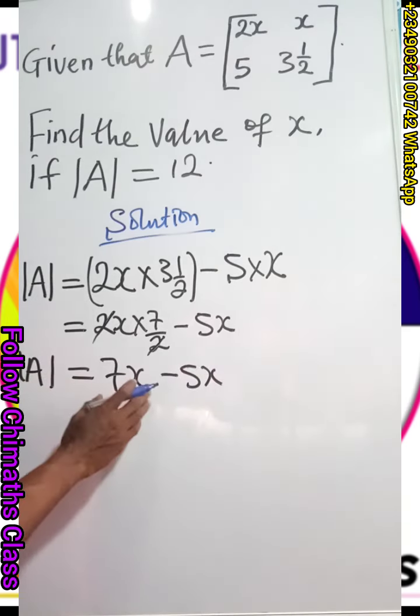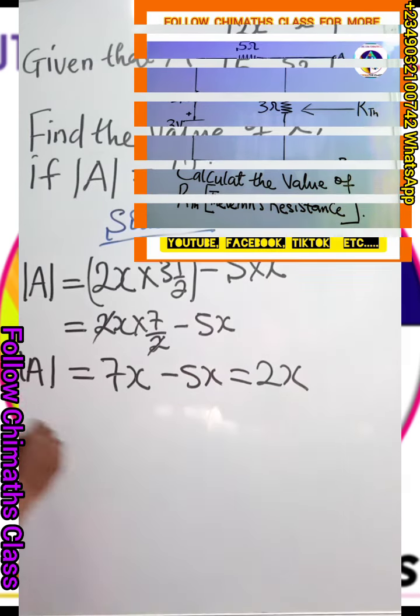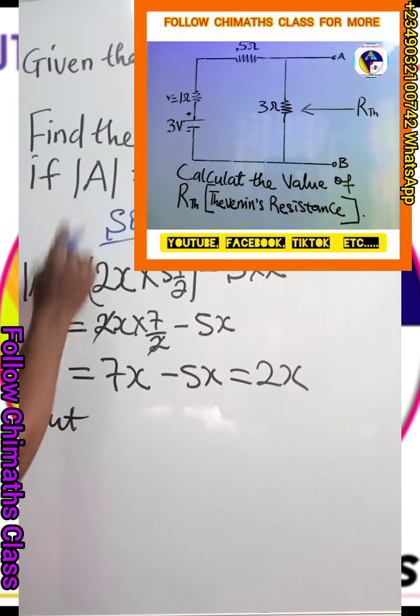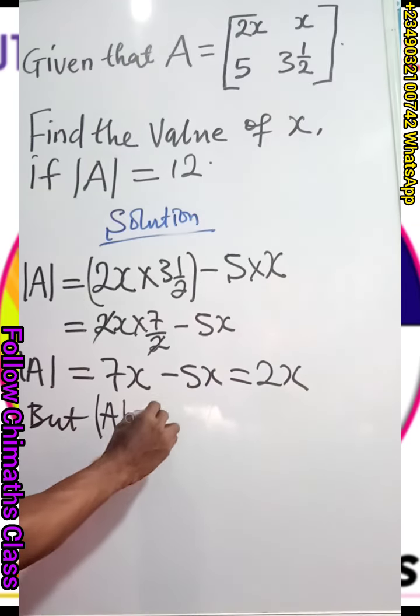The determinant equals 7X minus 5X, which gives us 2X. But it is given that this determinant A equals 12.